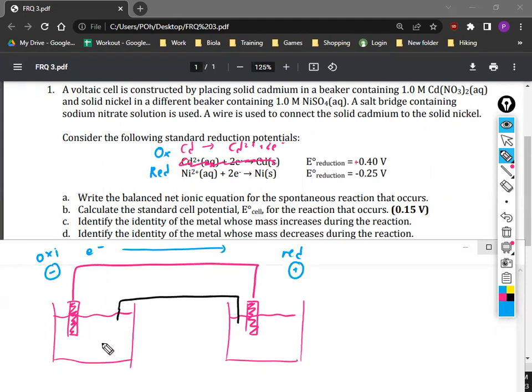Your reduction is going to be positive, and the electrons flow from negative to positive. So your oxidation one, this metal right here, will be Cd. You'll have Cd2+ ions. You'll have nickel ions in here, and you'll have solid nickel right here.